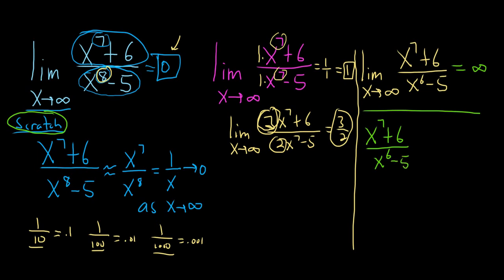So we have x to the 7 plus 6 over x to the 6 minus 5. And again, when x is really big, who cares about the 6 and the 5? If x is like 1 billion, you have 1 billion to the 7th power plus 6. Who cares that you're adding 6? So you can just drop the numbers. It's awesome. And so this is approximately equal to that, which is equal to x. And this approaches infinity as x approaches infinity, right?